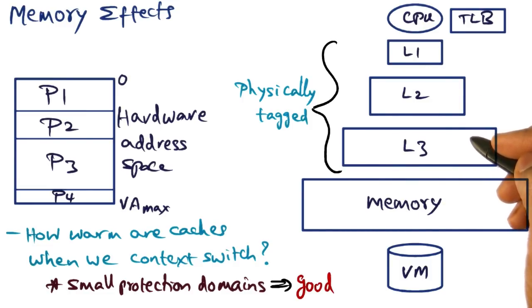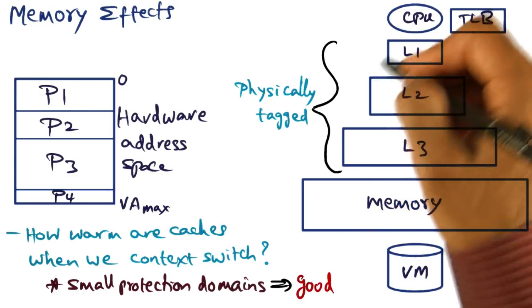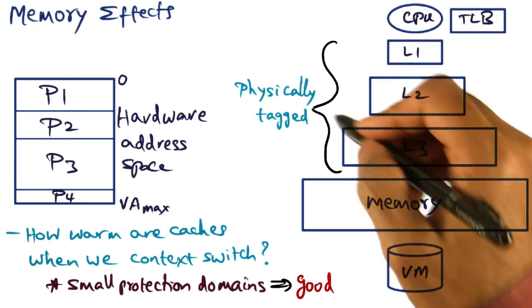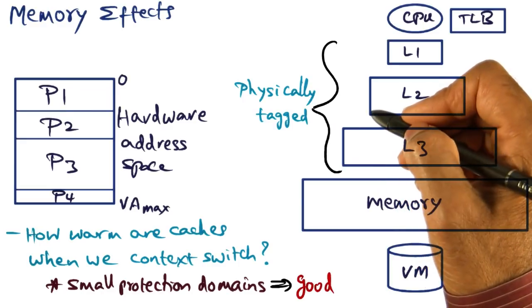So even if we have a monolithic kernel and the monolithic kernel has subsystems that occupy a significant portion of the hardware address space, even though we are not doing any context switch, the ill effects of implicit costs in the memory hierarchy is going to be felt because the caches after all are physically tagged.